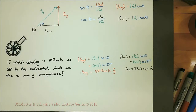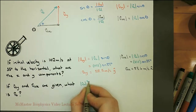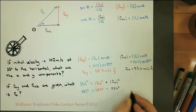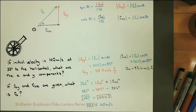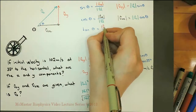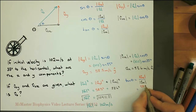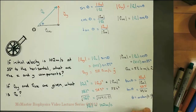We can also do this in reverse. If the velocity in y and the velocity in x are given, we can find the total velocity. To determine the magnitude of the total velocity, we use the Pythagorean theorem, finding the magnitude to be 102 meters per second — the same as the velocity given above. To find the angle, we use the last part of SOHCAHTOA, taking the arctan of the ratio between the velocity in y and the velocity in x, which gives 35 degrees — the same as above.